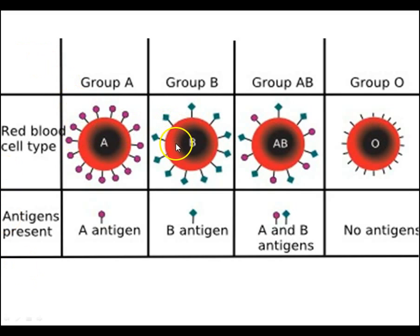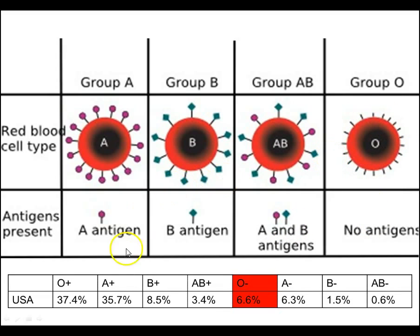Here are the four different blood types: A, B, AB, and O. Blood type A has only the A antigen; blood type B has only the B; blood type AB has both; and blood type O has neither. Looking at the population breakdown, O positive and A positive collectively make up over 70% of the population, so chances are good you're one of those. Blood type O negative is the universal donor — I am O negative, and that means I can donate blood to anyone. If you're O negative, you should donate blood as well — it is used in hospitals and emergency rooms.